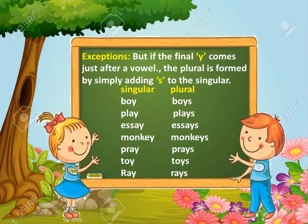There are exceptions. If the final Y comes just after a vowel, the plural is formed by simply adding S to the singular. Here are some examples: boy → boys, play → plays, essay → essays, monkey → monkeys, toy → toys, ray → rays.